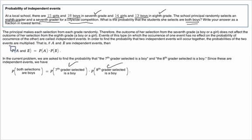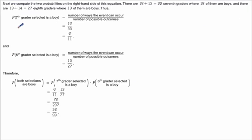So once again, we use our handy-dandy formula. The probability that both of those randomly selected students, one seventh and one eighth grade, are both boys. It's the probability of the seventh grade boy times the probability of the eighth grade choice being a boy.